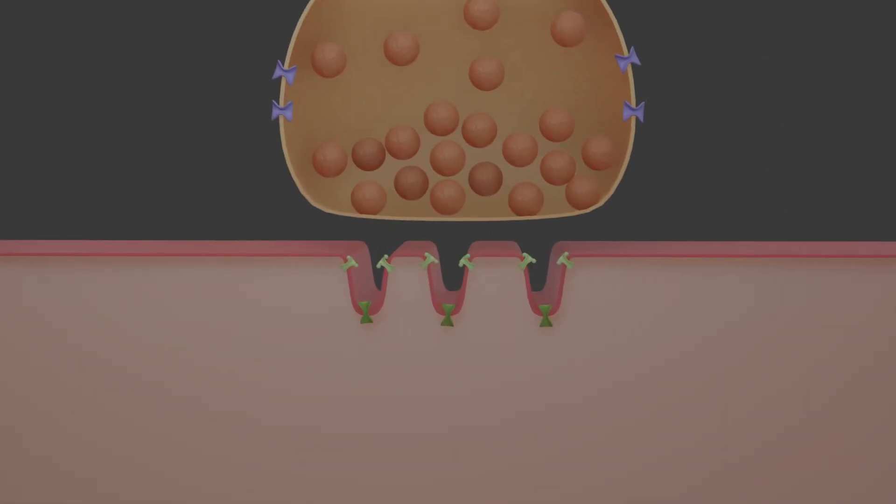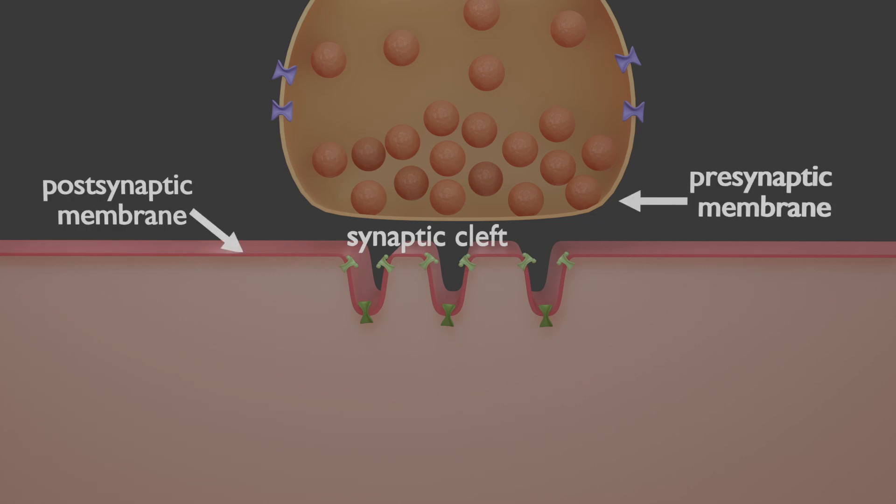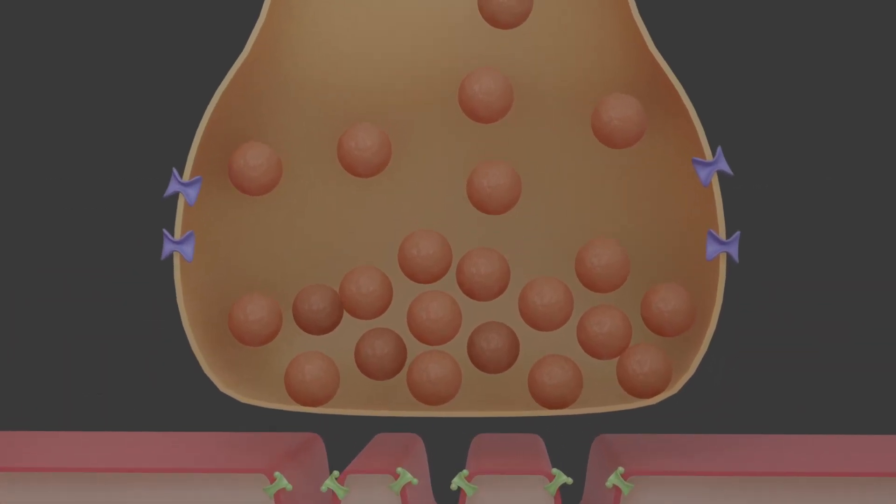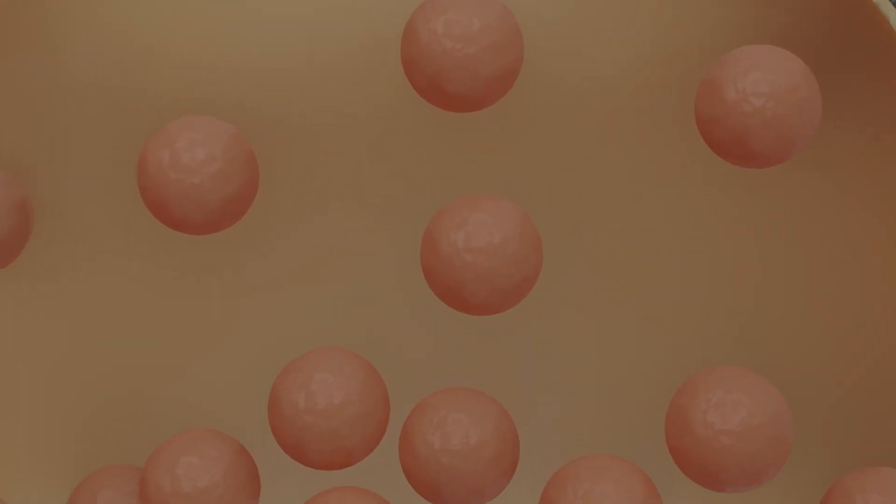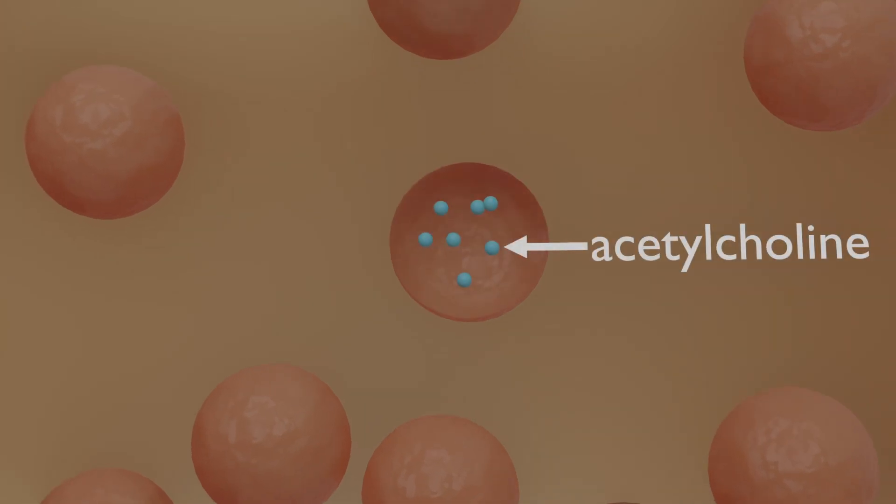The motor end plates can be divided into presynaptic membrane, synaptic cleft, and postsynaptic membrane. The so-called end buttons contain numerous vesicles that contain the neurotransmitter acetylcholine, a substance that is essential for signal transmission at the motor end plate.